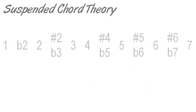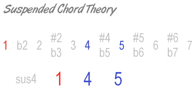For example, whereas a major chord contains the root, major third and fifth, a suspended fourth chord would replace the third with a perfect fourth, raising the major third by a half step. This gives the chord a feeling of suspense — a more open and unresolved sound than major or minor chords.